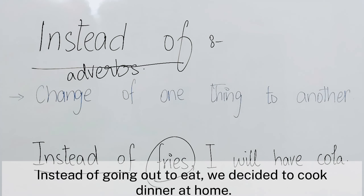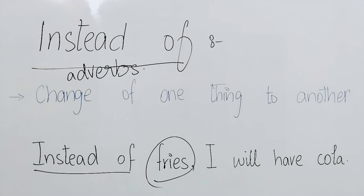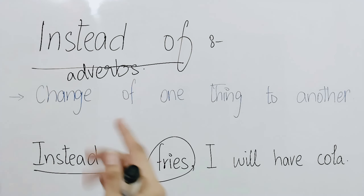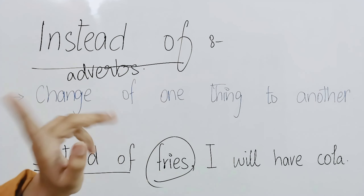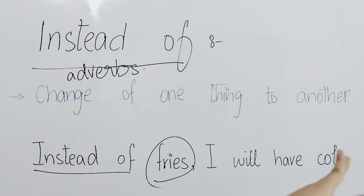Another example: Instead of going out to eat, we decided to cook dinner at home. So first the plan was to go out for dinner, but now we changed that and decided to cook at home. This is how we use instead of — when we change one thing with another.